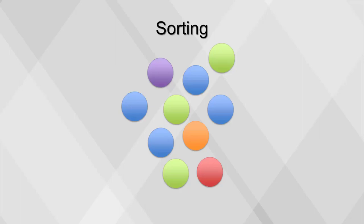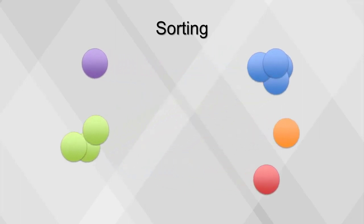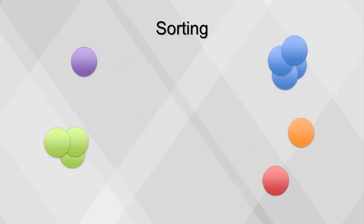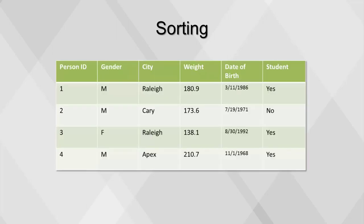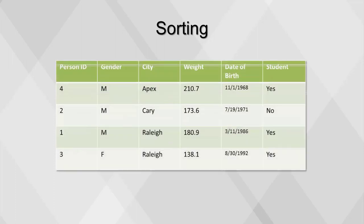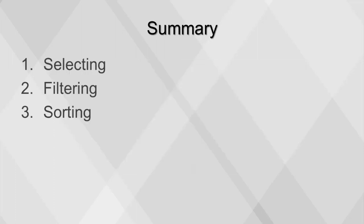The next step is sorting. When we sort, we rearrange a table by ordering the rows according to the values of one or more fields, in either ascending or descending order. For example, a table can be sorted by date of birth in ascending order, or by city in ascending order and then by weight in descending order.